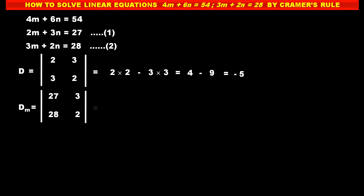So the value of D_m equals: first term 27 × 2 (elements of the principal diagonal) minus second term 3 × 28 (elements of the secondary diagonal). Solving: 27 × 2 = 54, and 3 × 28 = 84. So D_m = 54 − 84 = −30. This is the value of determinant D_m.